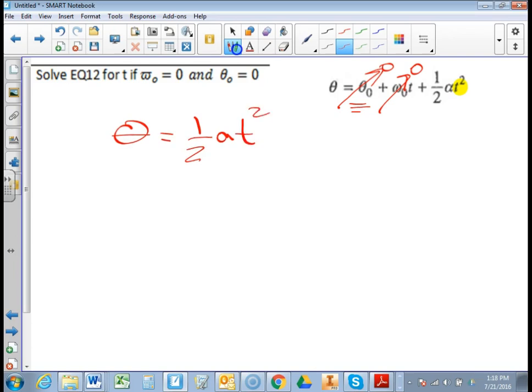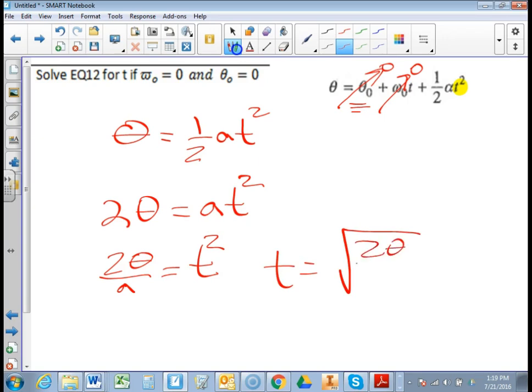That really leaves me with theta equals 1 half a t squared. And we've seen a problem like this. In fact, it looks exactly like the end of the last video. So maybe you should pause the video and try this one on your own at this point and see if you get the right answer. Welcome back. So now we're going to multiply both sides by two. So I have two theta equals a t squared. And I'm after t. So I'm going to divide both sides by a, which is going to leave me with two theta over a equals t squared.